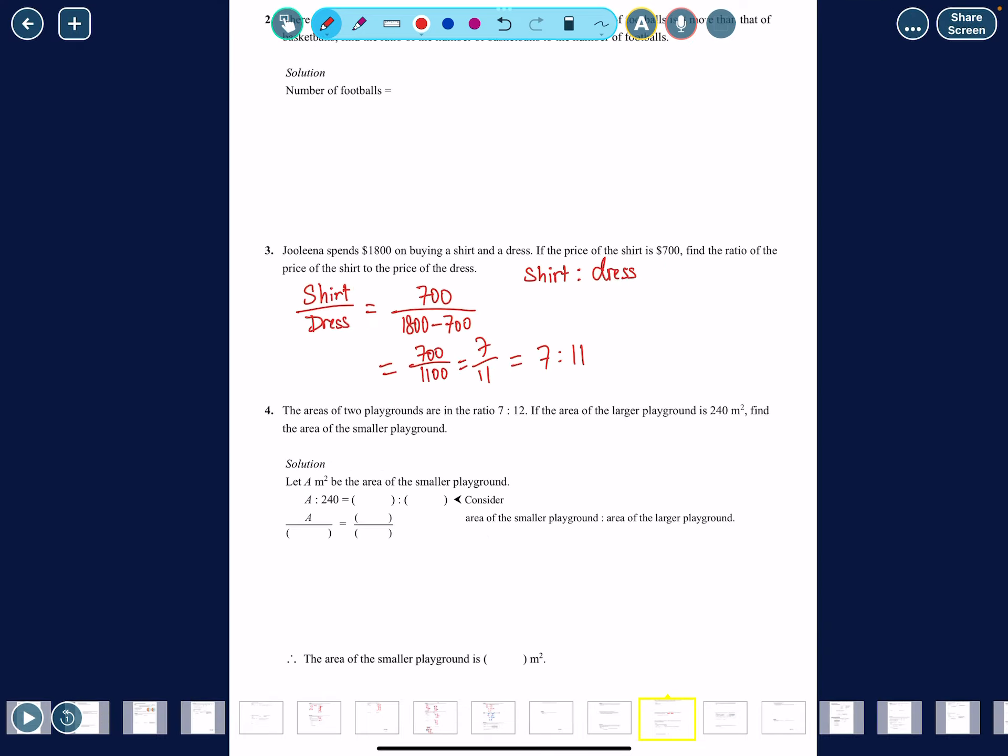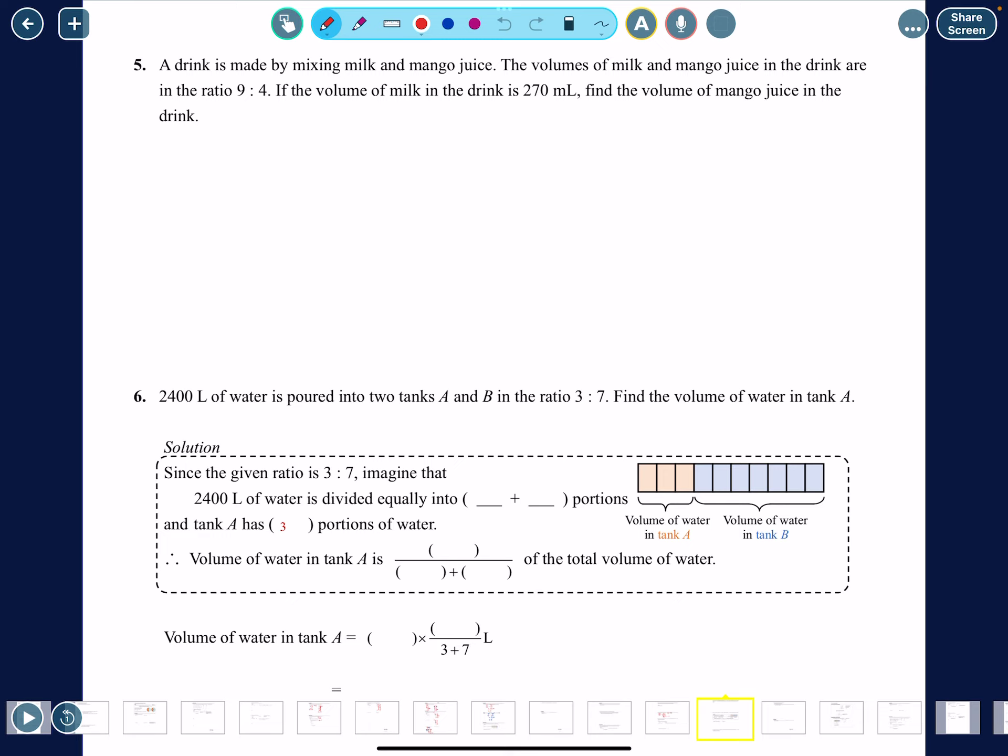This one's a different one. A drink is made by mixing milk and mango juice. The volumes of milk and mango juice in the drink are in 9 to 5 ratio. Let's color code this: milk is in red, which is 9, mango juice is 4 - no wait, the volume of the milk will be red colored.